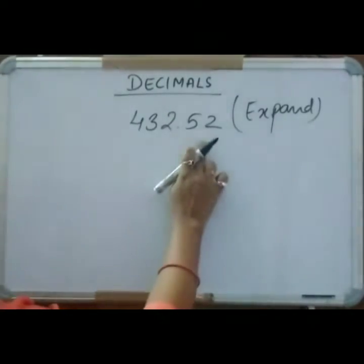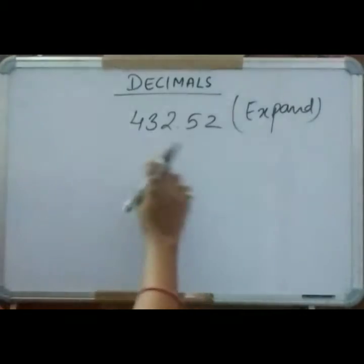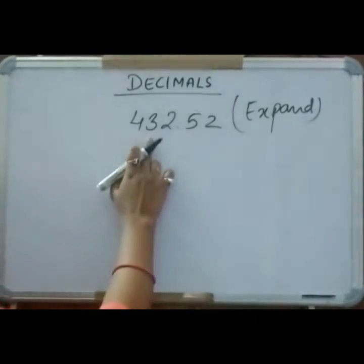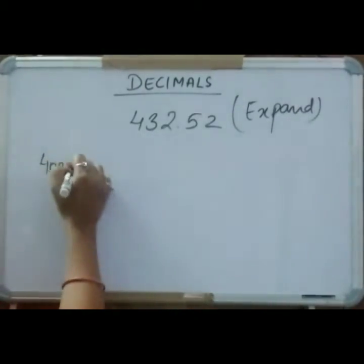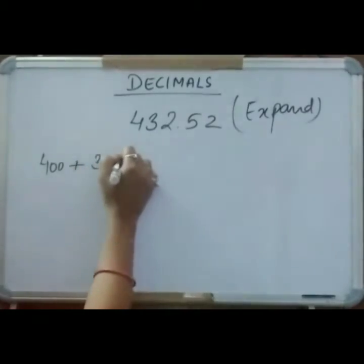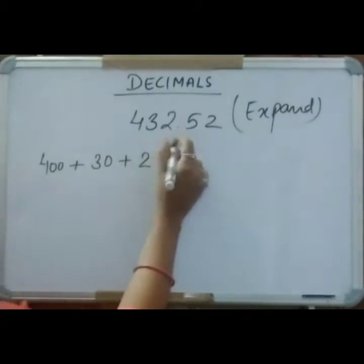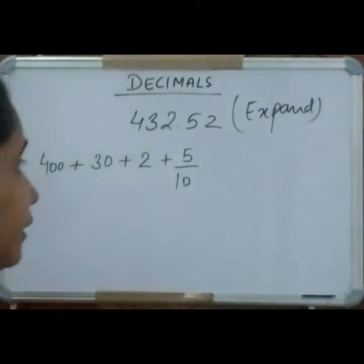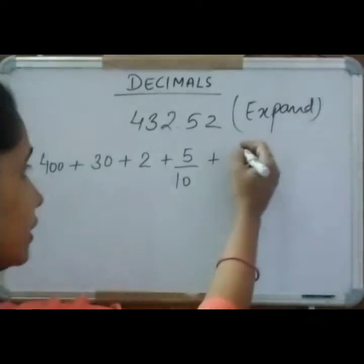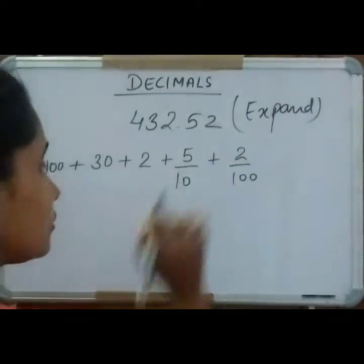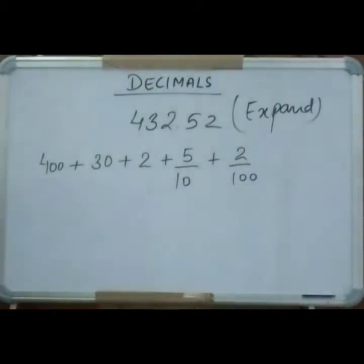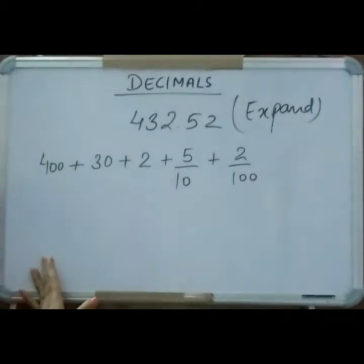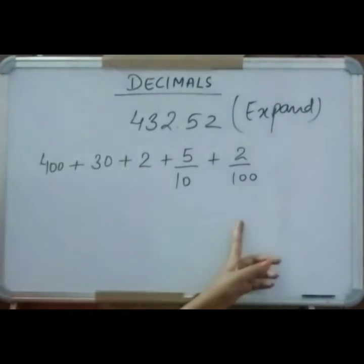We have to expand this number. See — ones, tens, hundreds. So four hundred plus thirty plus two, and five is at the tenths place — we write it as five upon ten. And two is at the hundredths place. This is the expanded form. This is how we expand numbers given in decimal form.